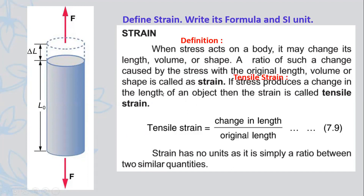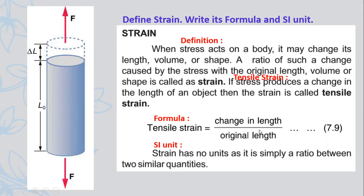If stress changes the length of a body, in this case we call the strain tensile strain. The formula for tensile strain is: change in length over original length. Regarding units of strain, strain has no units because it is simply a ratio between two similar quantities. The numerator and denominator are both length with units of meters, which cancel out. That is why strain has no units.